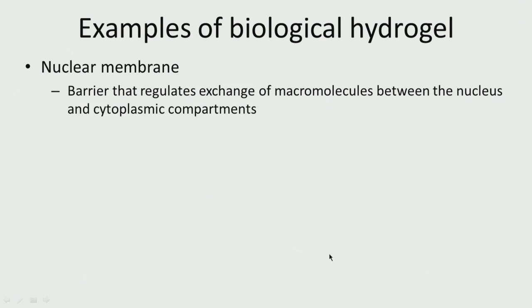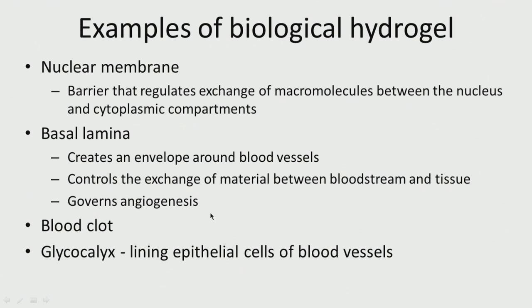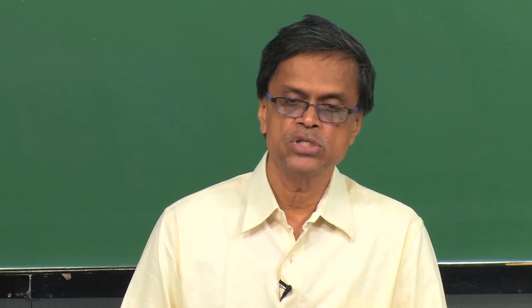Other biological hydrogels include the nuclear membrane, which regulates exchange of macromolecules between the nucleus and cytoplasmic compartments; the basal lamina, which creates an envelope around blood vessels, controls exchange of material between the blood stream and tissue, and governs angiogenesis; blood clots, which are also hydrogels; the glycocalyx, the highly hydrophilic lining of epithelial cells inside blood vessels; and sinus secretions. So inside the body we have plenty of hydrogels that can swell and lose moisture, all serving important tasks.